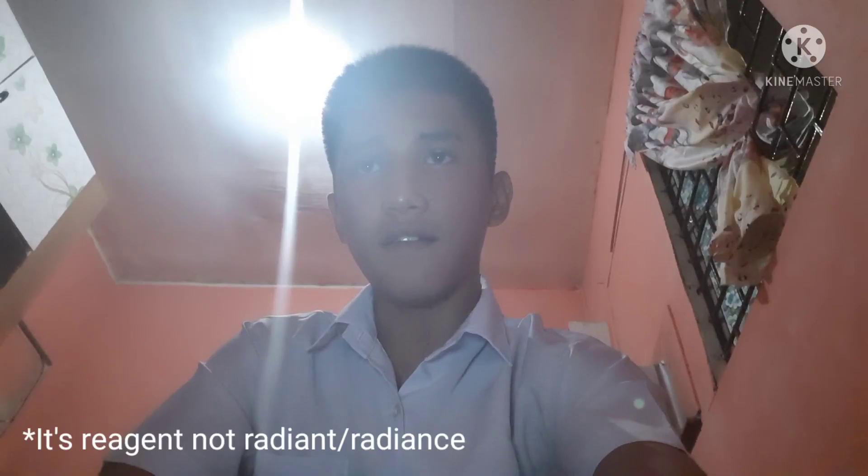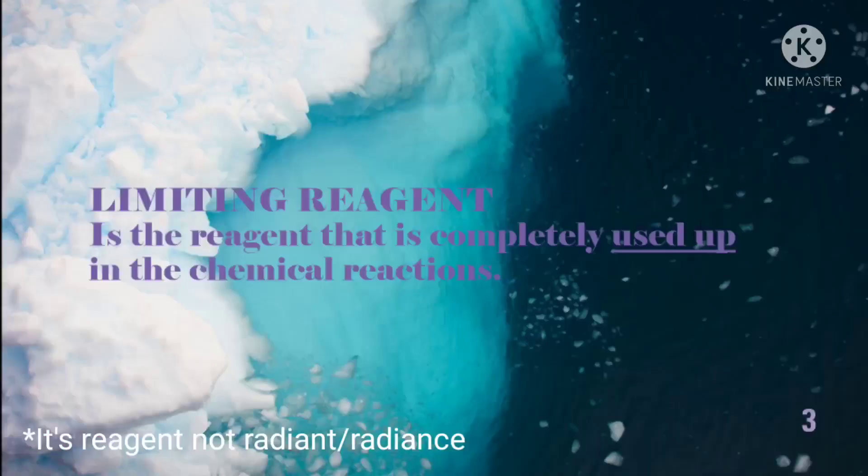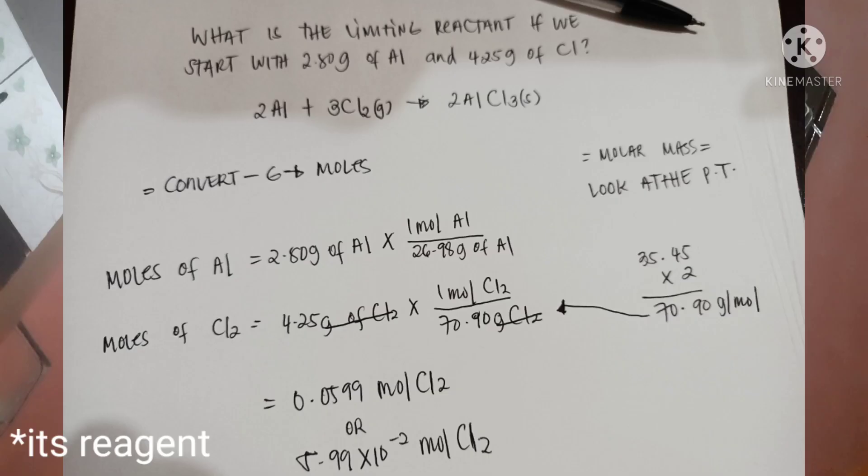Let's start on finding limiting reagent. So what is limiting reagent? Limiting reagent is the reagent that is completely used up in the chemical reactions. For example, what is the limiting reagent if we start with 2.80 grams of aluminum and 4.25 grams of chlorine? Here is the equation.